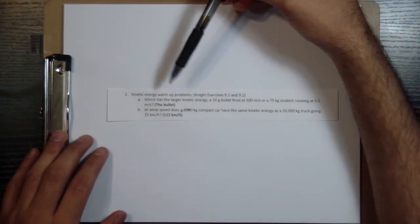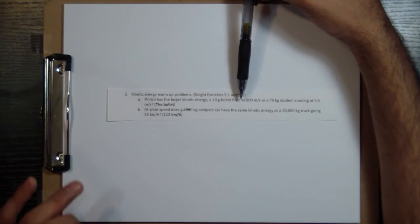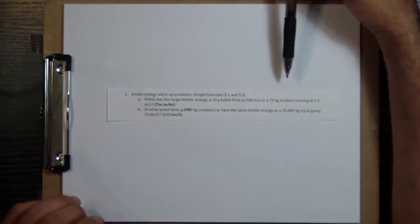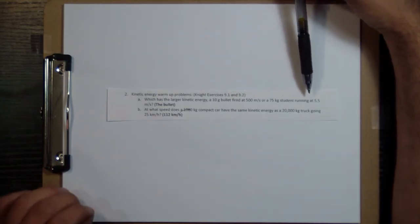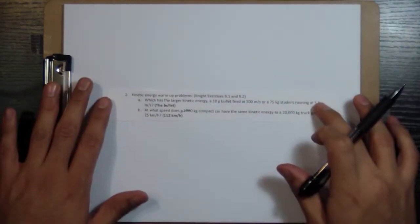Let me read you the first part, which has the larger kinetic energy? A 10-gram bullet fired at 500 meters per second, or a 75-kilogram student running at 5.5 meters per second?